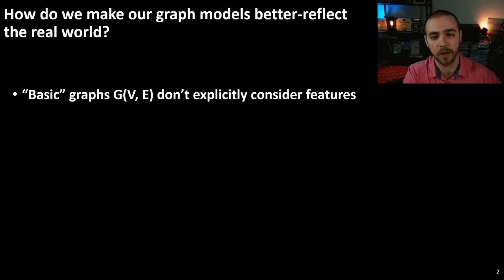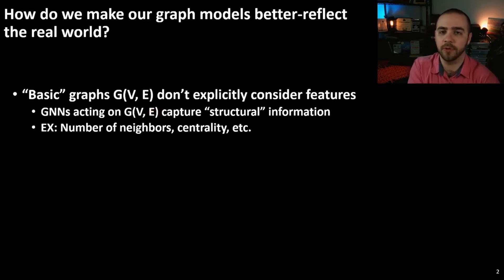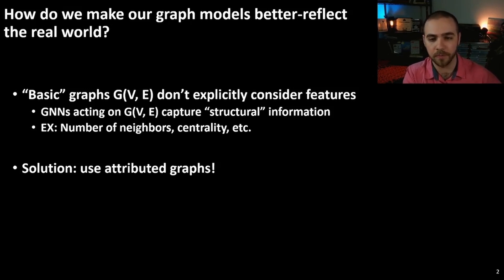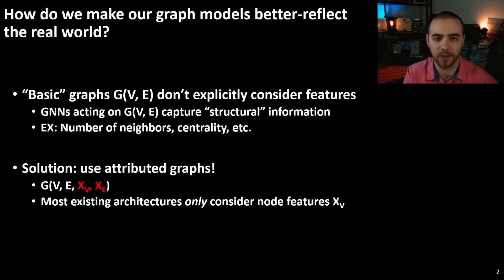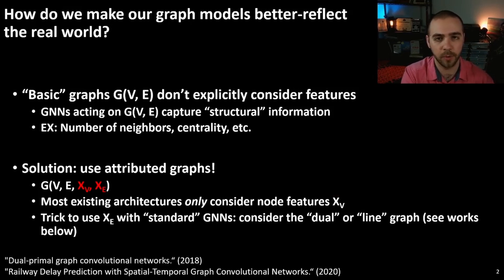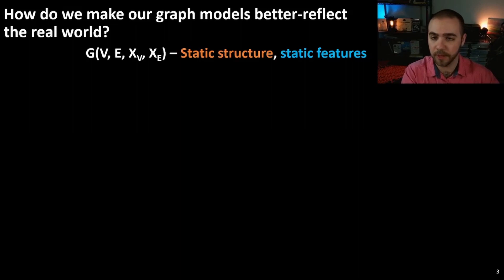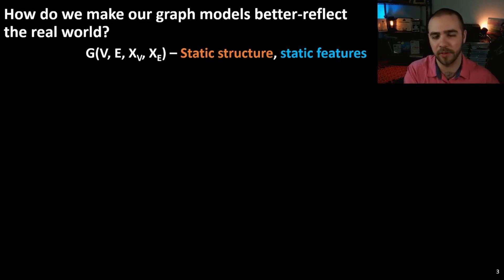A basic graph does not explicitly consider features. If you just have a graph neural network acting on a set of nodes and edges, you're only capturing structural information — like the number of neighbors or the centrality of individual nodes. The solution is to use attributed graphs, where we add sets of features for the vertices and for the edges. Most existing architectures only consider node features; however, there's a simple trick if you want to use edge features: you look at the dual or line graph, and there are papers you can reference for the details there. Features are a powerful way to make graph models better reflect the real world.